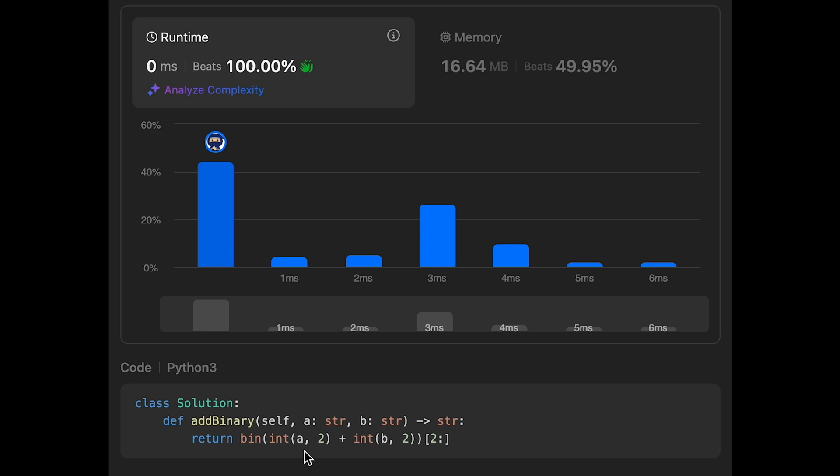The time complexity of this solution should be order of length a plus length b. That's because we convert two input strings. And the space complexity is also order of length a plus length b, because we use binary function. So I think we create a new string.